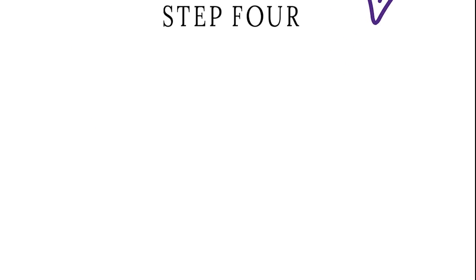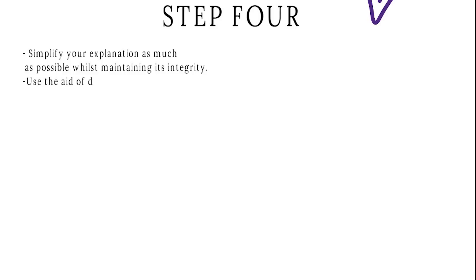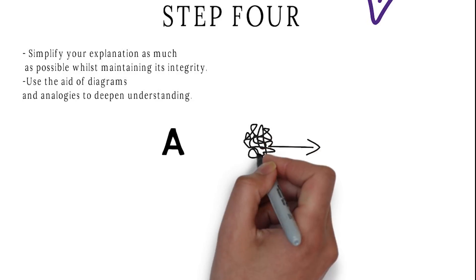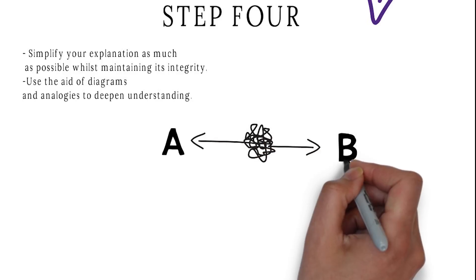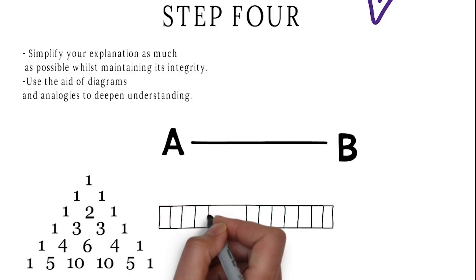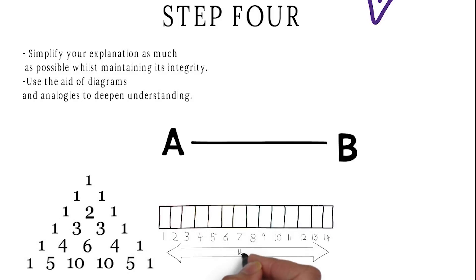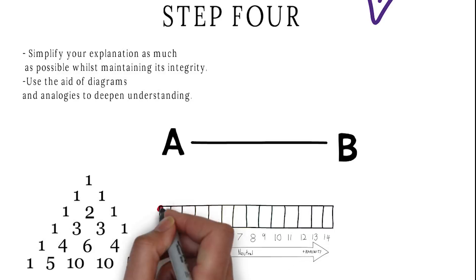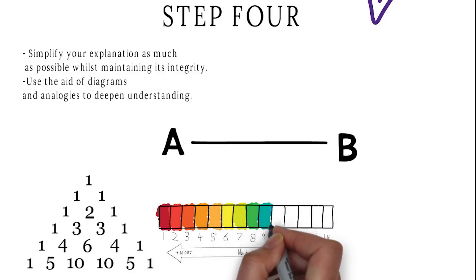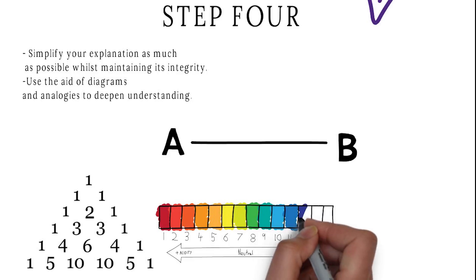Step four: simplify your explanation even more. Strip it down to the raw essence while still maintaining the integrity — it still needs to make sense and convey what the concept is all about. Use diagrams, analogies, metaphors, stories — whatever you need — as long as you're able to remember it and explain it simply.